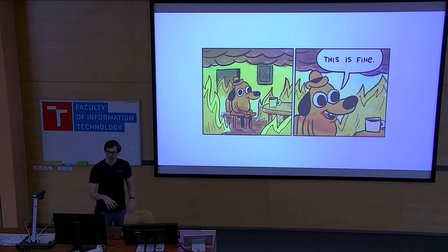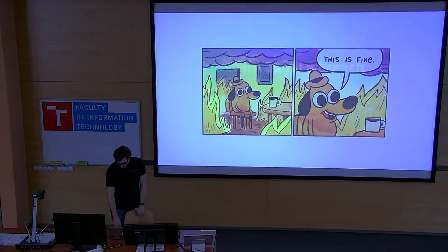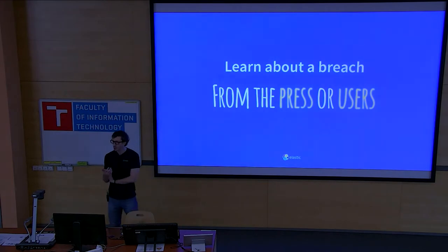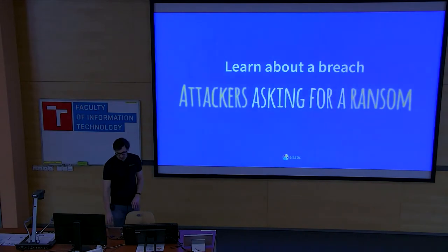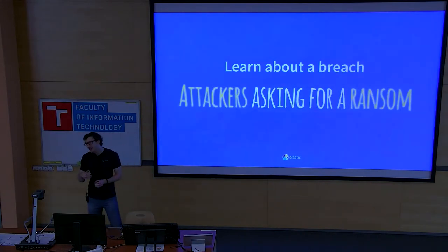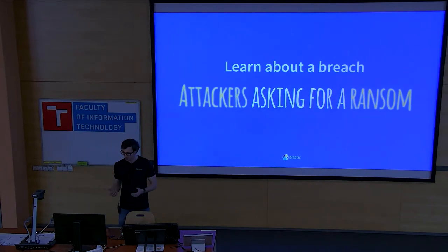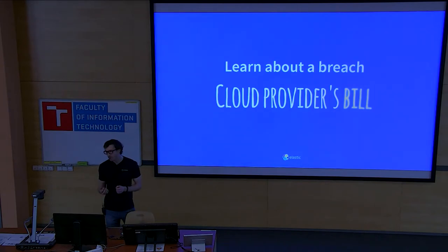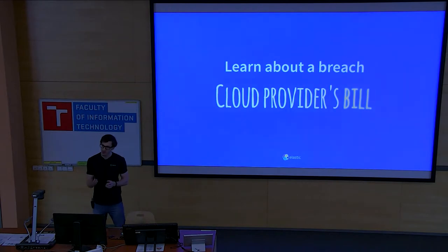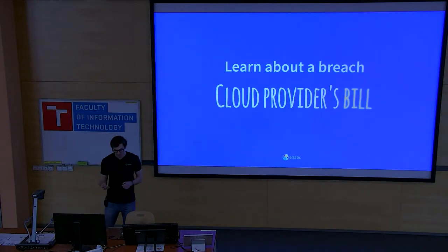Generally, the stages of how bad something could be would be something like this. Worst case: you learn something bad happened from your users or from the press — you're not going to have a good day. The next step is maybe somebody takes your data ransom. Or you just see it on your cloud provider's bill because somebody got your AWS keys and started mining bitcoins. Then it's just getting very expensive — maybe a bit embarrassing, but mainly expensive.